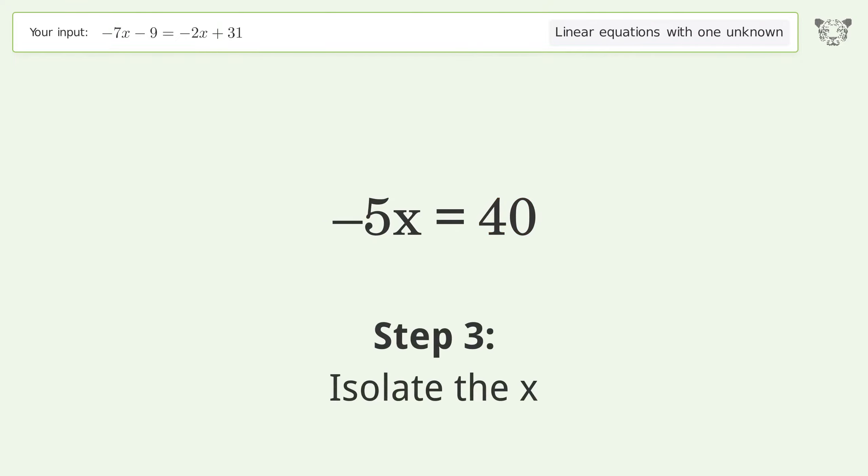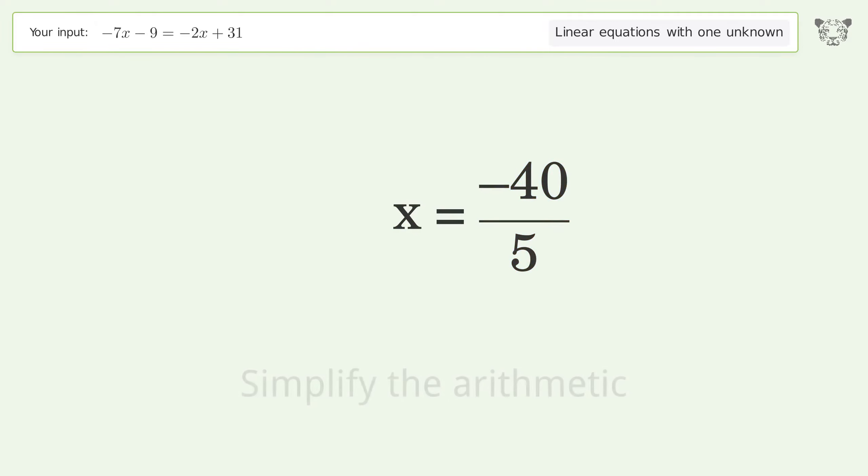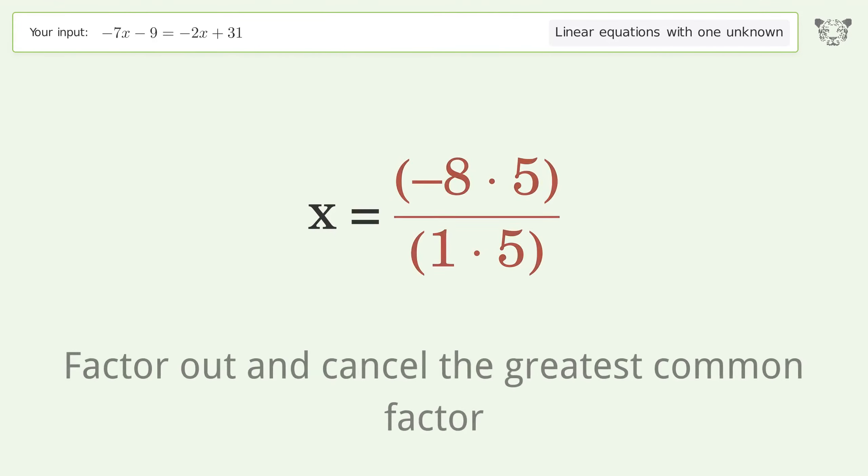Isolate the x. Divide both sides by negative 5. Cancel out the negatives. Simplify the fraction. Simplify the arithmetic. Find the greatest common factor of the numerator and denominator. Factor out and cancel the greatest common factor.